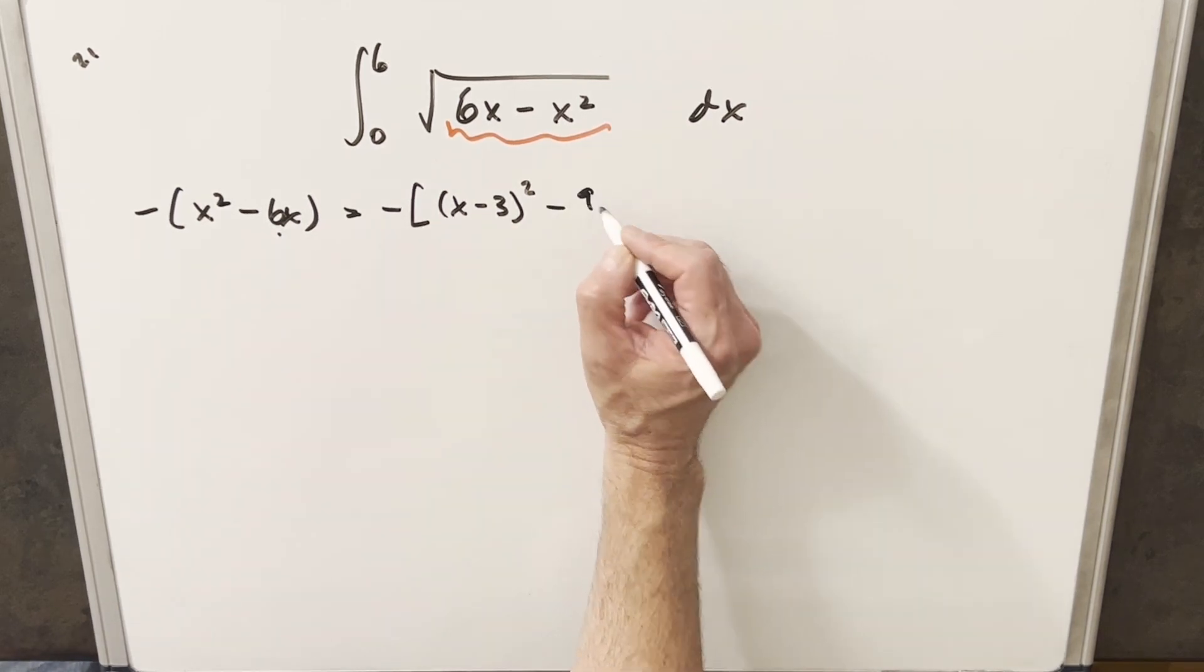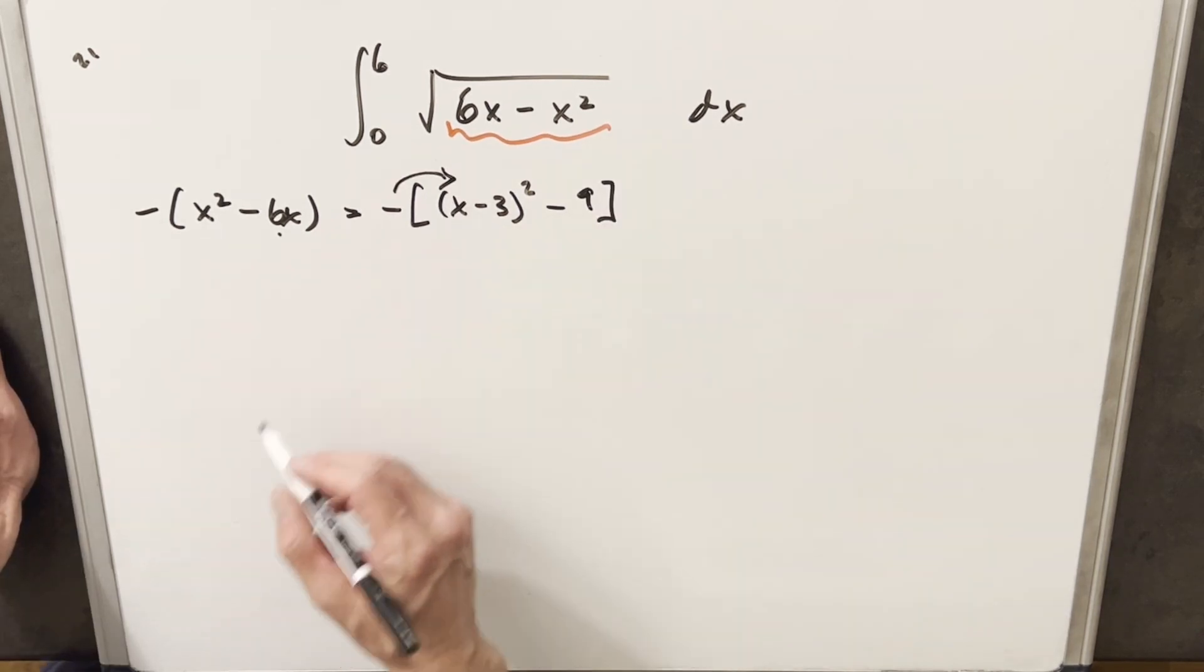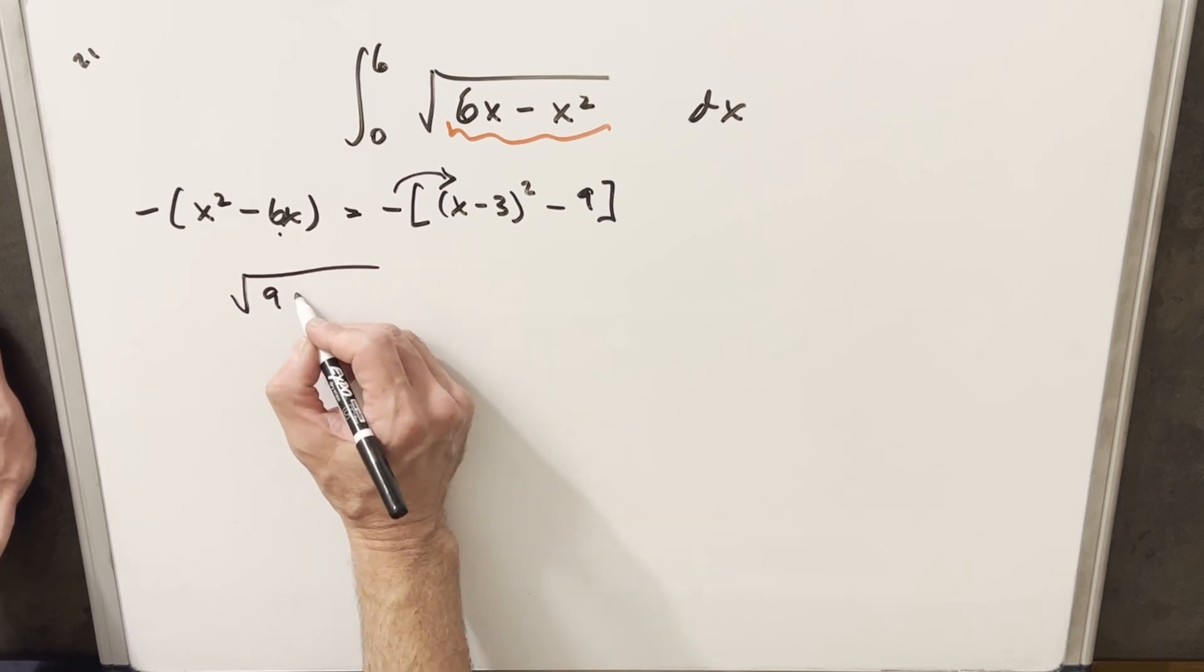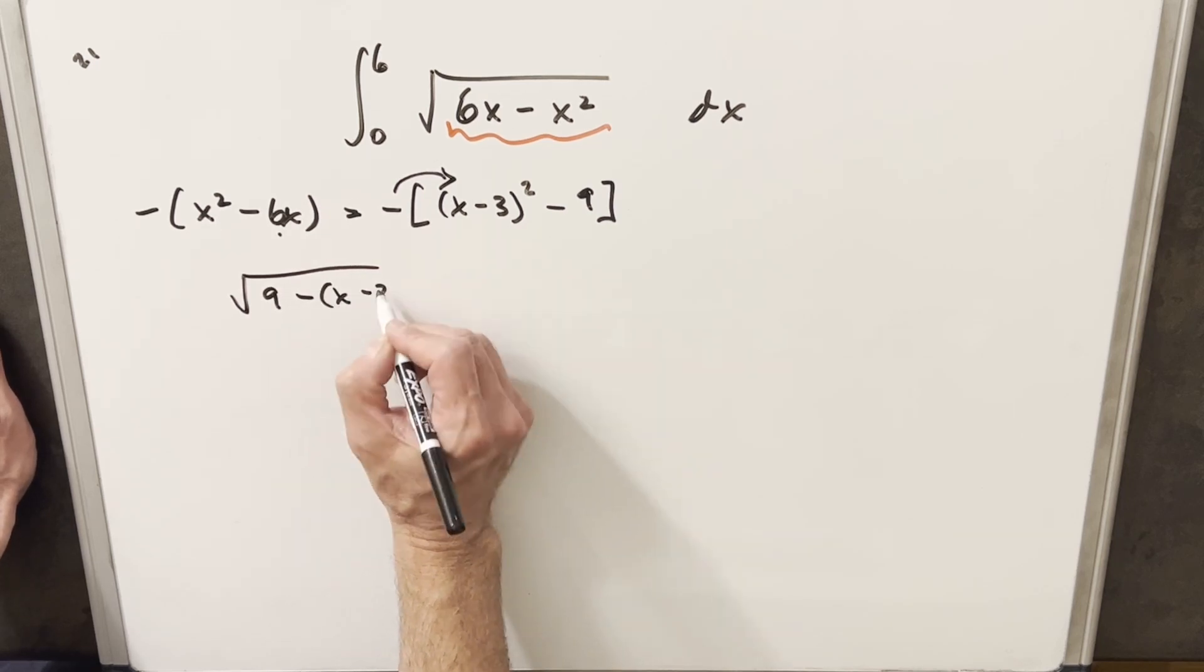So I'm just going to subtract off 9. And then if we distribute this minus sign and put it back under the square root, we're going to end up with 9 minus (x minus 3) squared.